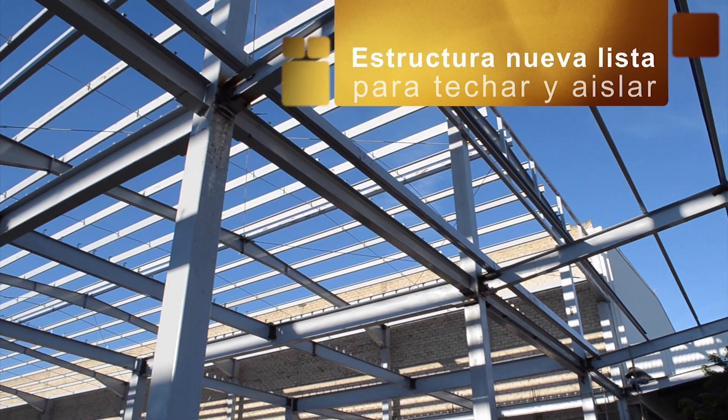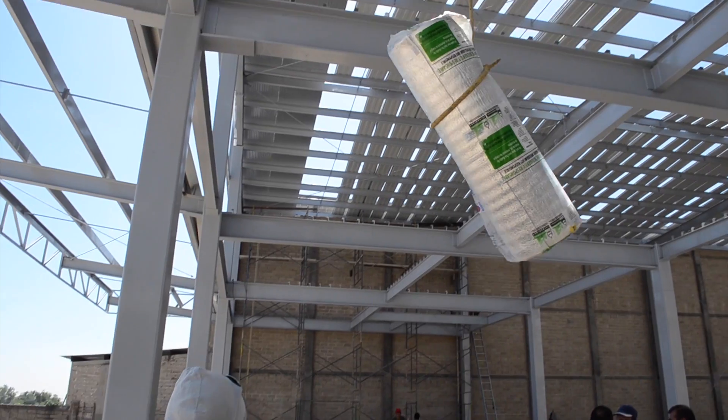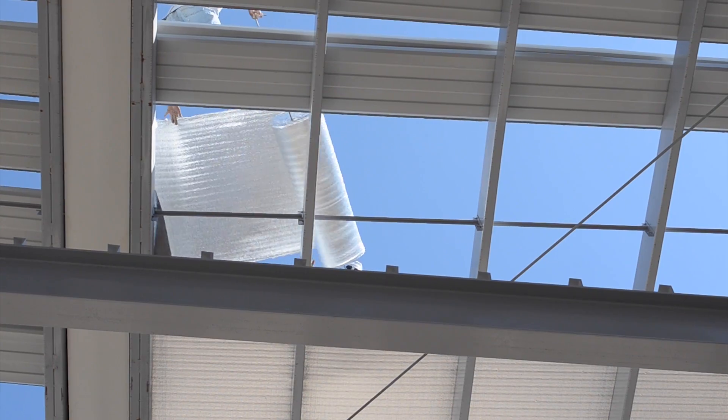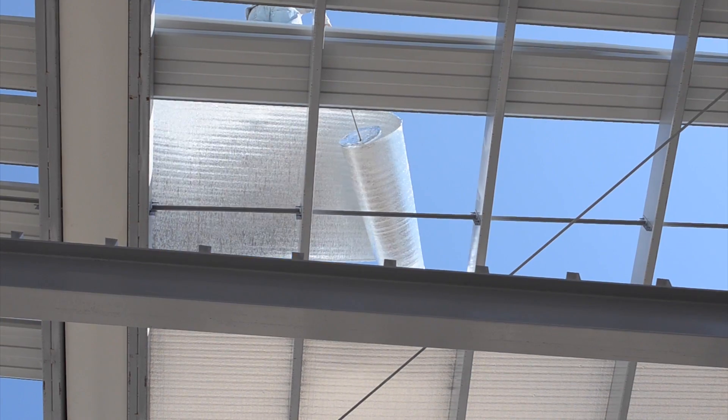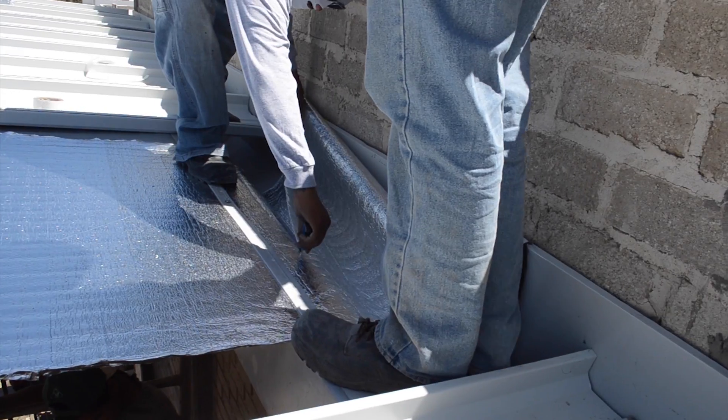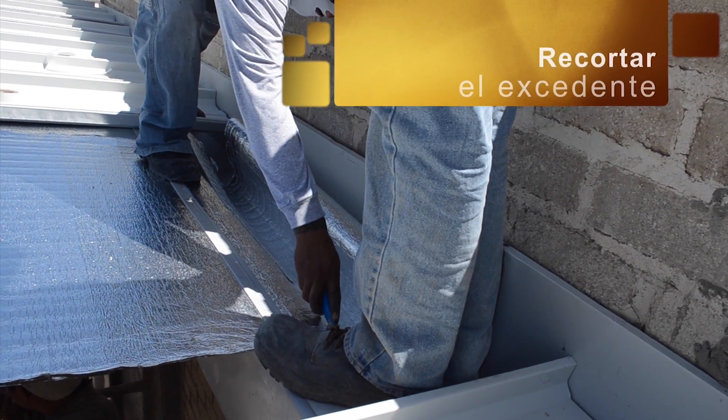The Prodex insulation has a low emissivity surface that can reflect up to 97% of radiant heat. By placing our insulation at the ceiling or wall, it will avoid the building envelope gaining heat.